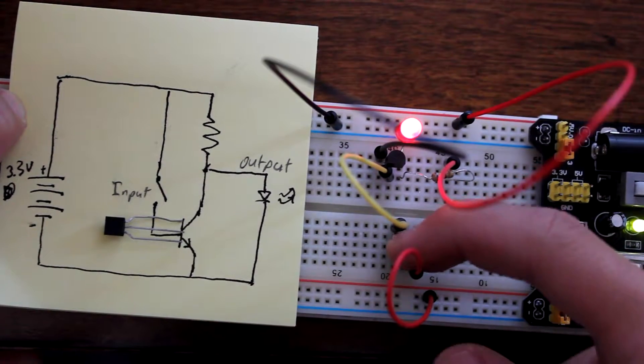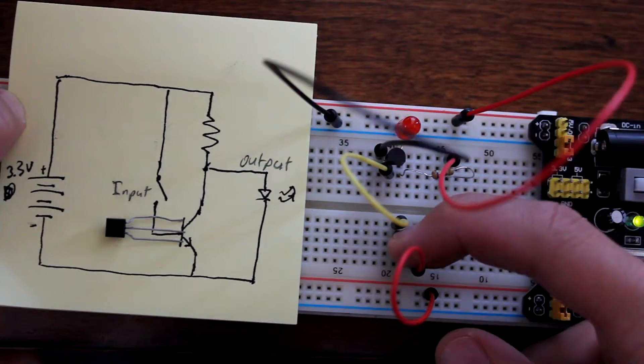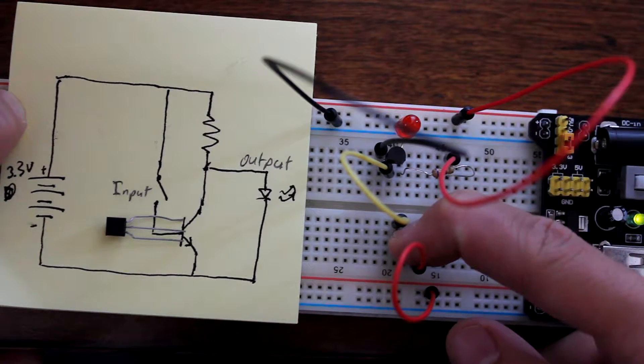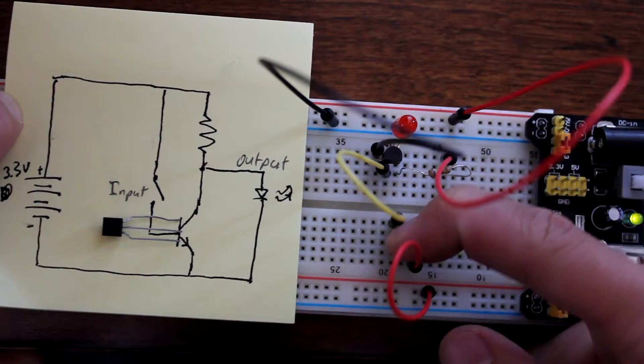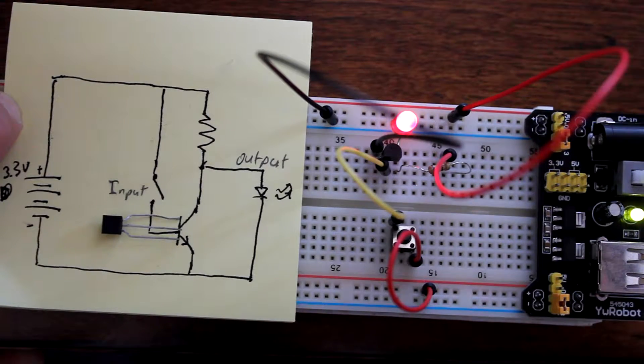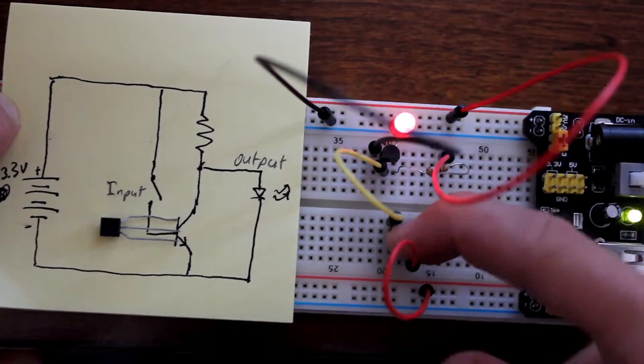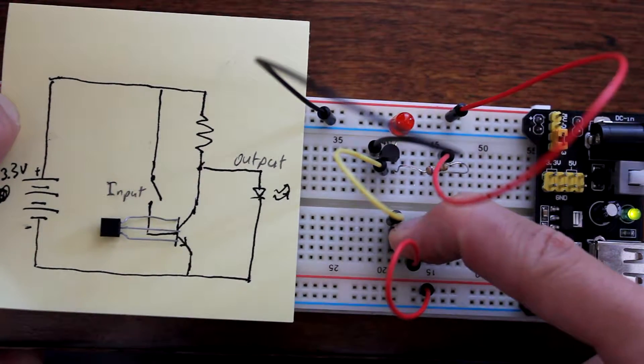When I press down this switch, the LED indicates an output of zero volts, so the zero state. So when my input is zero, the output is one, and when my input is one, the output is zero.